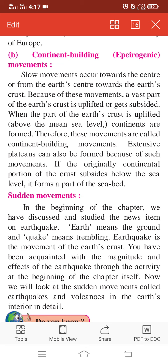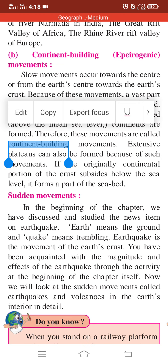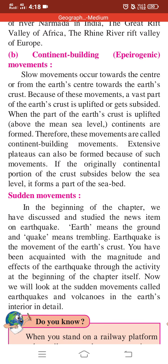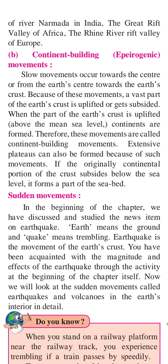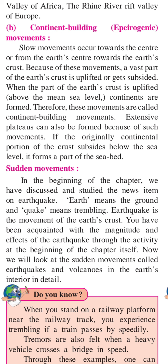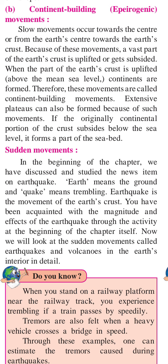Because of these slow movements, a vast part of the earth's crust is uplifted or gets subsided. Most of the earth's surface is under water — earth's major portions are below sea level. Slowly, slowly, these portions become uplifted above mean sea level, forming the continents. Therefore, these are called continent-building movements. Extensive plateaus can also be formed because of such movements.